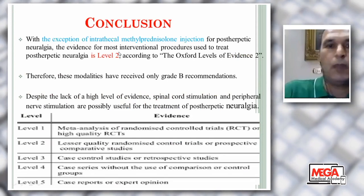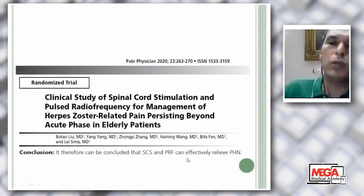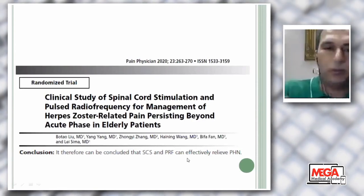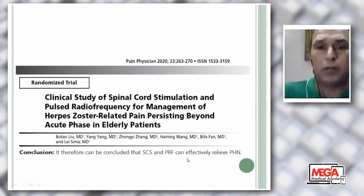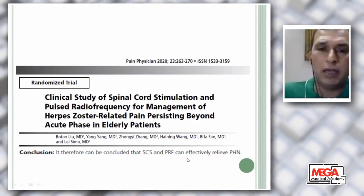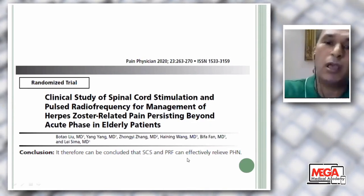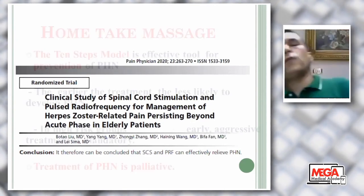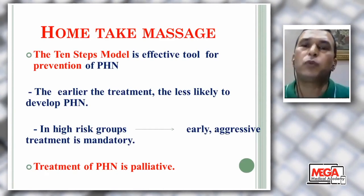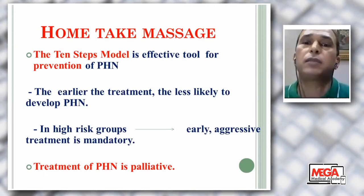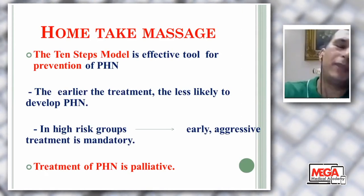In 2020, a study in Pain Physician from China found that spinal cord stimulation and pulsed radiofrequency for dorsal root ganglia are both effective. Remember that both have a limited duration of effect, not continuous. Spinal cord stimulation is a positive procedure but carries complications like infection and lead migration, which can decrease efficacy. Pulsed radiofrequency has a limited duration of about six months to one year. In conclusion, please remember: prevention is better than treatment of post-herpetic neuralgia. The 10-step model is an effective tool. The earlier the treatment, the less likely to develop post-herpetic neuralgia. In high-risk groups, early aggressive treatment is mandatory. Treatment of post-herpetic neuralgia is palliative. Thank you.